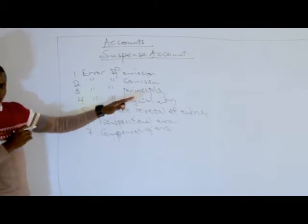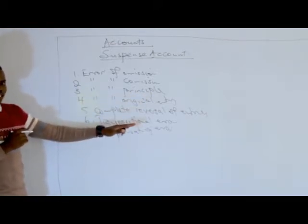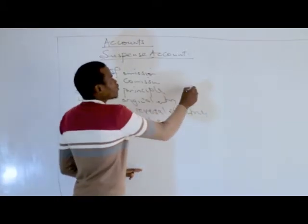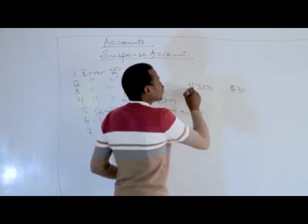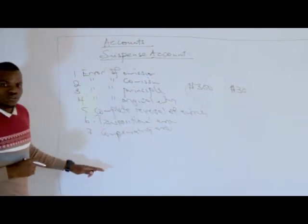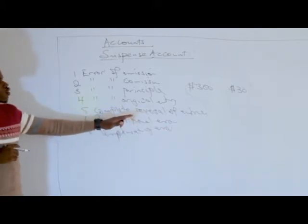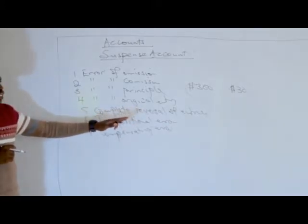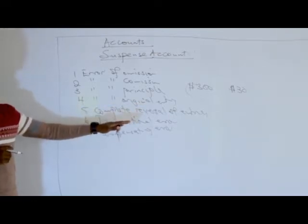Error of original entry is an error that occurs when a wrong figure has been used. For example, we are given 300 and then we end up recording 30. This is known as an error of original entry. Complete reversal of entries occurs when a transaction has been recorded on the wrong side of an account, but using a correct figure.